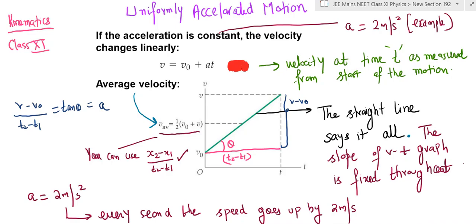This is the way you calculate the slope of this line: take the perpendicular of the triangle and then take the base of the triangle. You divide the two - what you get is change in velocity divided by the time, and that is what is called acceleration, tan theta. The straight line slope is constant throughout.